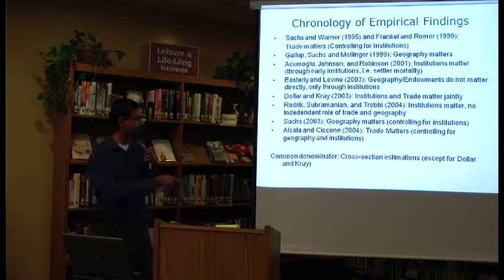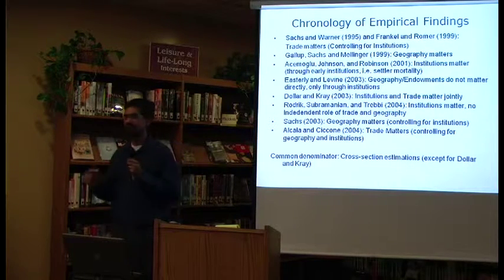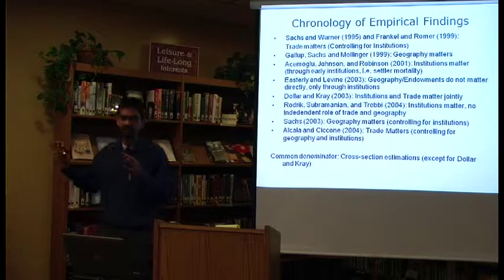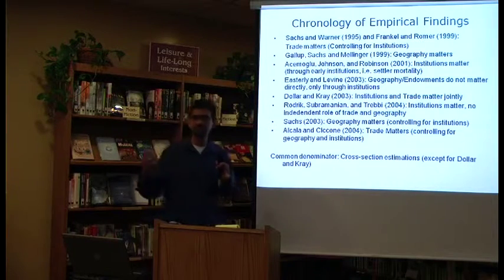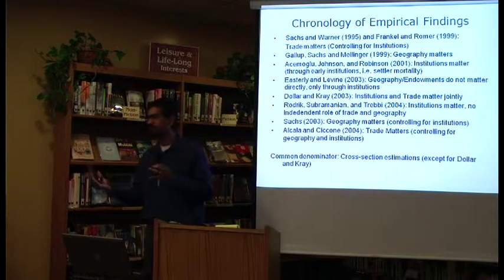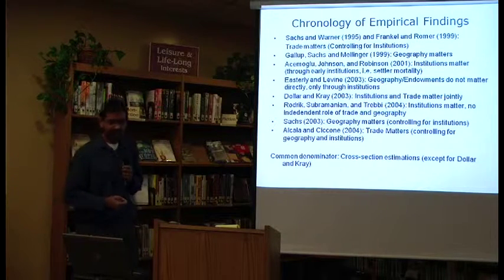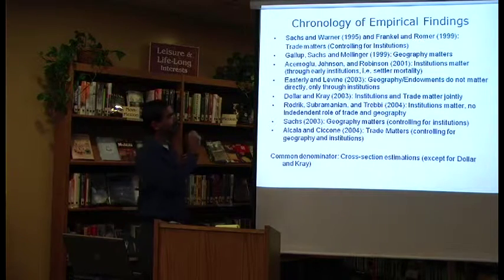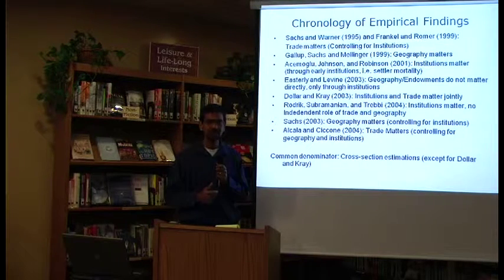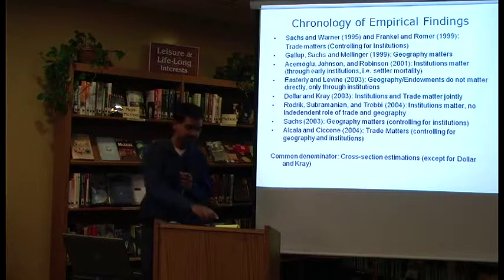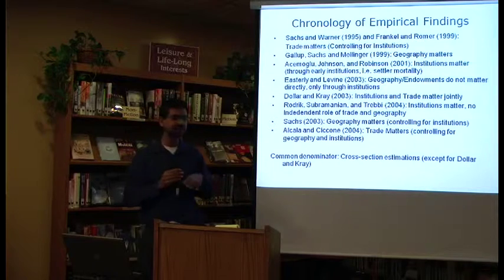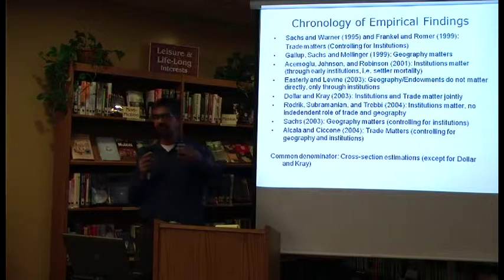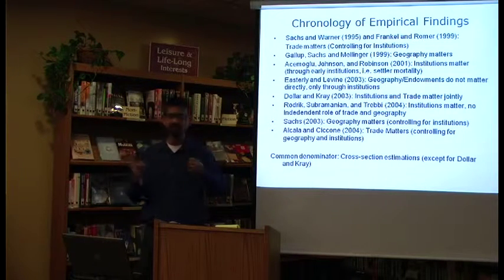If we accept the premise that geography is the one that really matters and nothing else matters, then you really can't do anything about those countries — they have bad disease environments, bad endowments, they're landlocked. No matter what you do, nothing can be done. One common problem with all these papers is that they look at cross-sections: they look at average income levels from 1950 to 1990, average levels of institutions, and average trade levels. For each country they have one data point, having lumped everything together and taken averages.